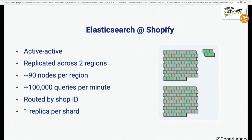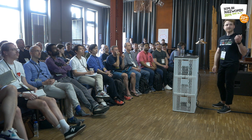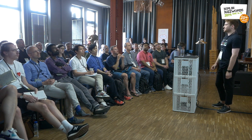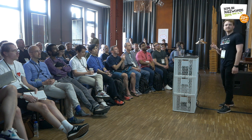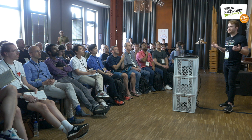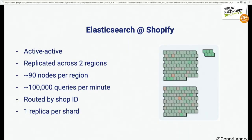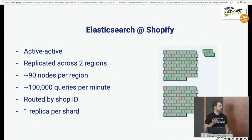This Elasticsearch cluster is set up in an active-active setup, fully replicated across two regions for resiliency. So if we have a GCP outage — which happened a couple weeks ago — we can simply fail over to the other region. Each region has about 90 nodes and hits about 100,000 queries per minute at peak. We route all queries by shop ID, and shard all shops by shop ID, so a single shard has all documents for a single shop. We run everything with one replica per shard, zoned across three zones in each region.